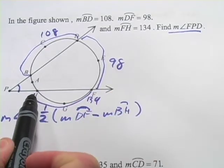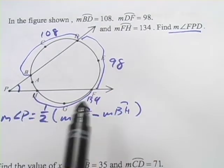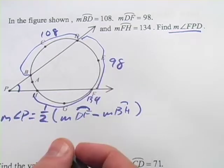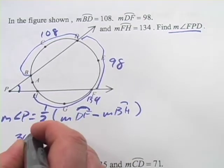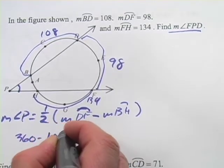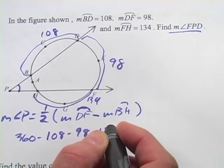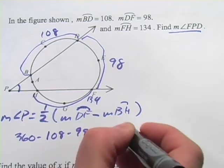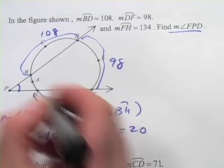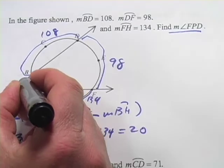I guess we need to find BH here, the other arc we need, the little one by subtracting all of these from 360. So, 360 minus 108 minus 98 minus 134, that is going to equal 20. So BH right here, that's 20.